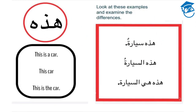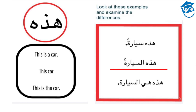In the first example, Hathihi Seyaratun, we have the ism el-ishara Hathihi with a singular, indefinite, feminine noun. It ends with a ta marbuta and contains nunation at its end. In the second example, Hathihi a-Seyaratu — a phrase meaning 'this car' — the definite noun loses nunation. In the third example, we add Hia, the pronoun for 'she' or 'it,' giving Hathihi Hia a-Seyaratu, meaning 'this is the car.'